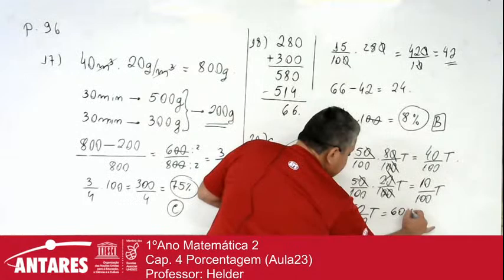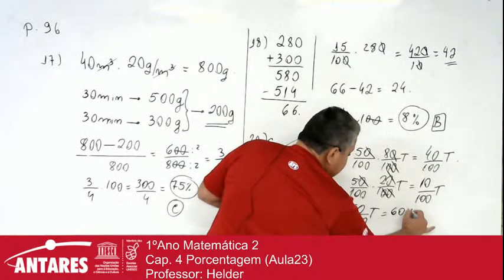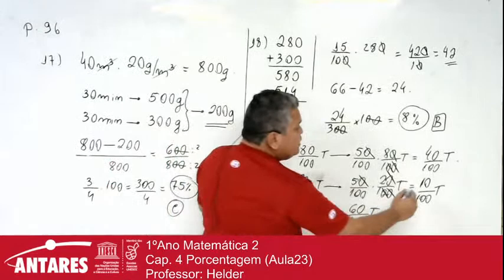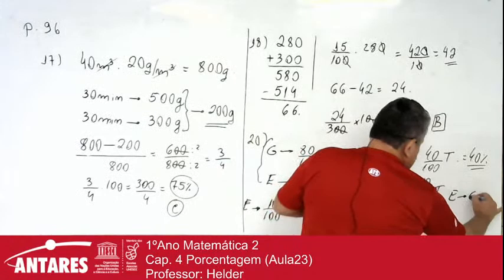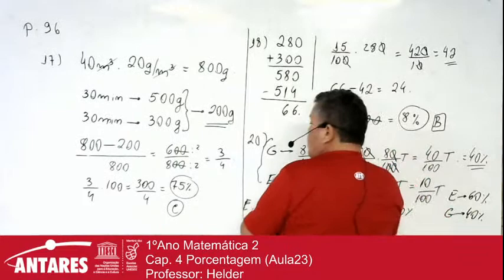10% que tinha, com 50% que ele vai botar de etanol, vai ter 60% no tanque. Ou seja, 60% de etanol e 40% de gasolina — que se manteve, pois ele não botou mais gasolina.